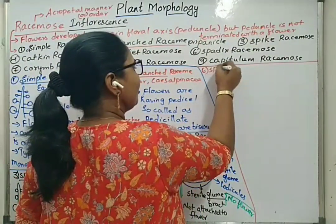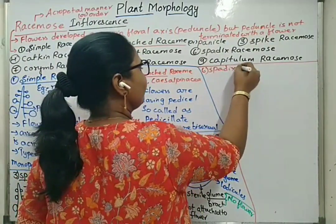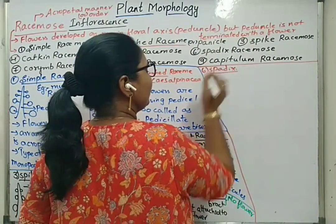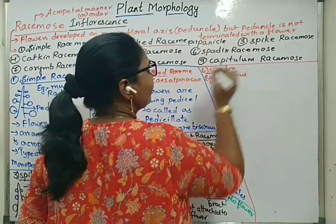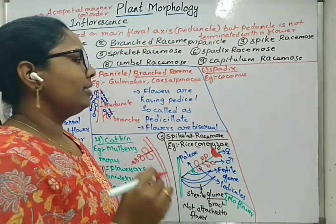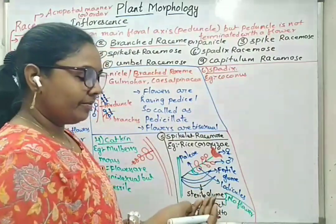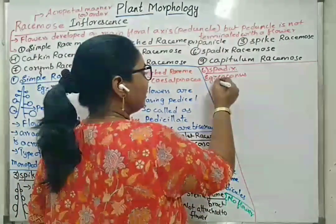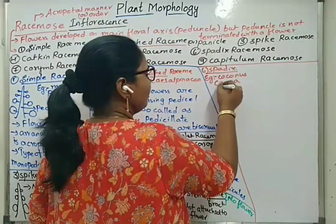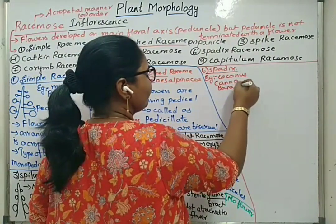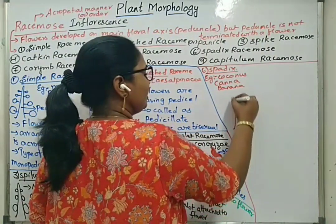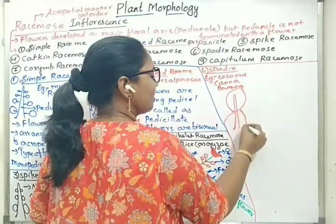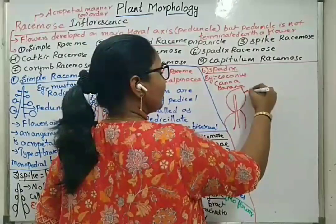Next is spadix inflorescence. Spadix inflorescence is seen in case of coconut, Canna, and Banana. The peduncle holds different types of flowers — male flowers, female flowers, and also sterile or neutral flowers. The bract that supports the total flowers is a modified bract called the spathe.